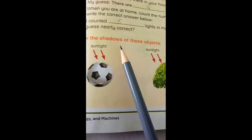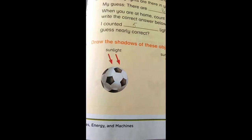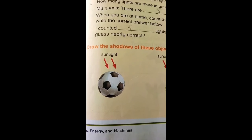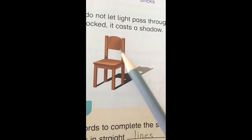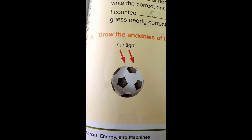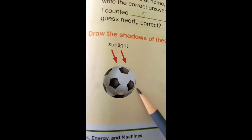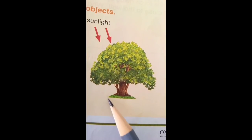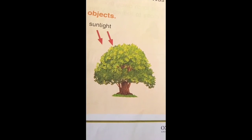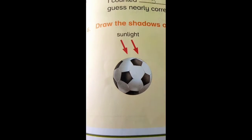In question number six, draw the shadow of these objects with the help of your parents or teacher. As I showed you earlier — jaise chair pe agar light padi toh uska shadow ground pe kaisa banta hai — same way, when sunlight falls on a ball, draw its shadow here. Similarly draw the shadow of the other object on the ground, in your book page number 83, neatly.